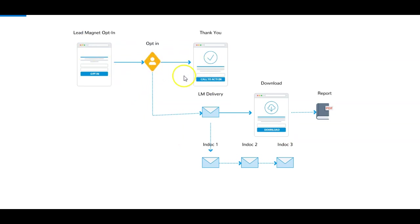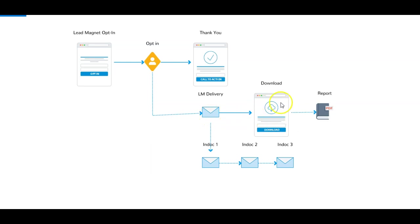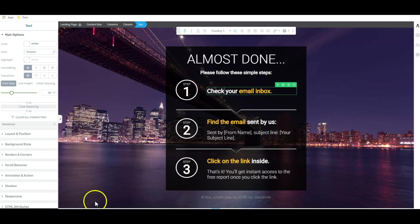This diagram shows the full flow: the lead magnet page — they click the button, enter your list where they get the first welcome message, and are passed on to the thank you page. The thank you page tells them to check their inbox and click the link in the email. That links to the download page, which links to your free report, free video course, or whatever you've got. From there, you send them emails as you go. That is how you create a simple, profitable sales funnel for affiliate marketing.